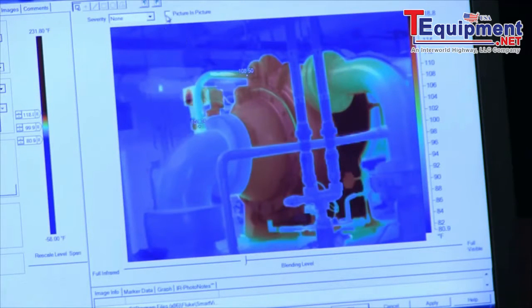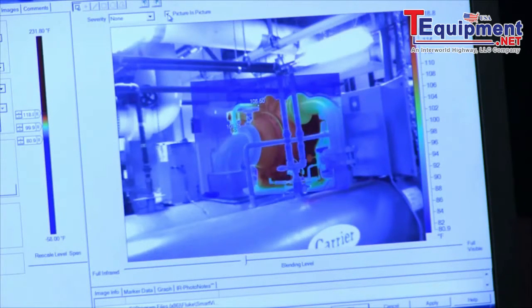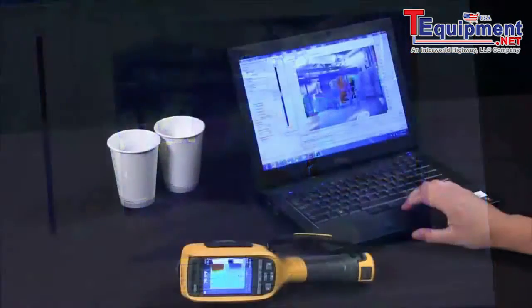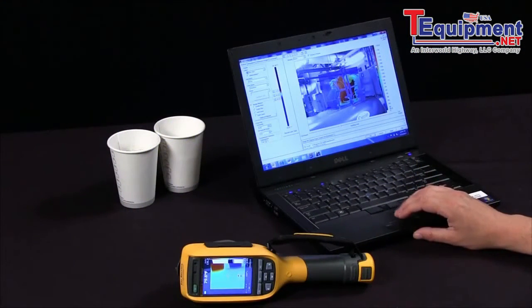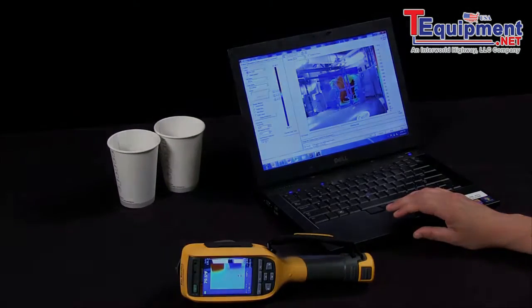And then I can also go to picture-in-picture, and this will allow me to ensure that I did have this camera in complete focus when I took this image. This is very important. This will also allow you to understand where you were when you took these images and be able to create a report that will allow you to do better predictive and preventive maintenance in your facility.